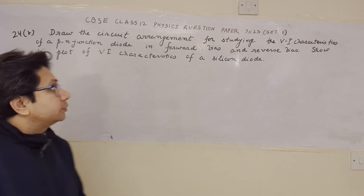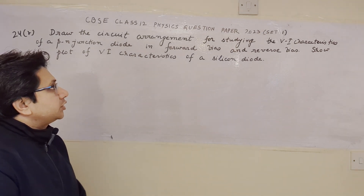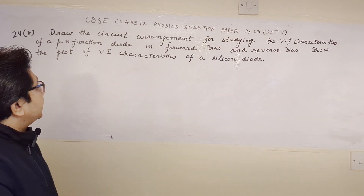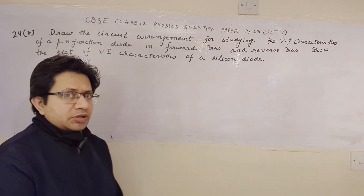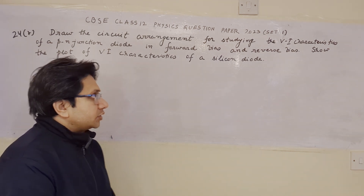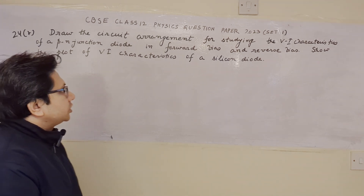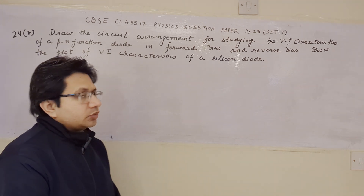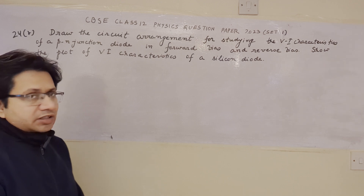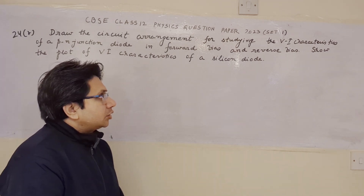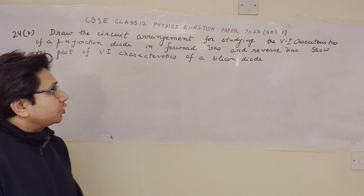Hello students. The question is: draw the circuit arrangement for studying the VI characteristic of a PN junction diode in forward bias and reverse bias. Show the plot of VI characteristic of a silicon diode. This problem is based on the topic of semiconductor electronics, and in particular about the semiconductor junction diode.